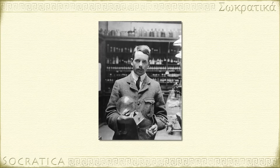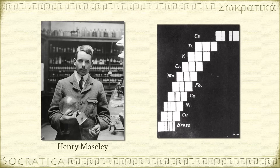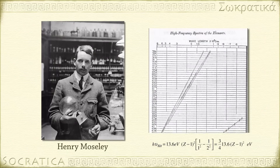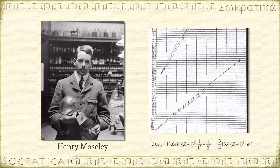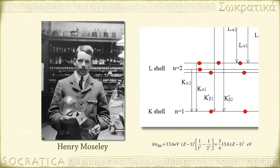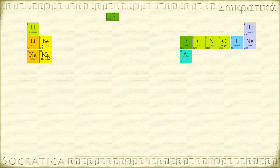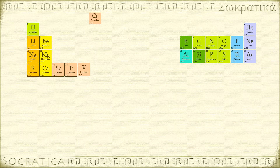In 1913, English physicist Henry Moseley made an important modification to the periodic table. Moseley, a member of Ernest Rutherford's research group, was probing metallic elements with x-rays and measuring the wavelength of the x-ray emissions. Each element gave different results. Moseley developed a mathematical relationship between the x-ray wavelengths produced by different elements and their atomic number, which increased by one for each element. He suggested that the atomic number was more significant for predicting chemical behavior than the atomic mass, and reorganized the elements in the periodic table listing them in increasing order of atomic number instead of atomic mass.